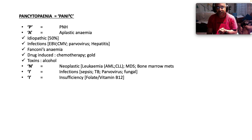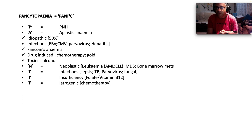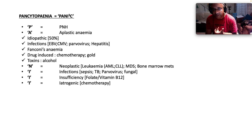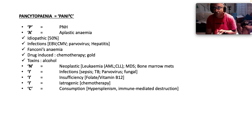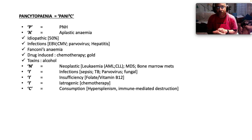I for insufficiency in the way of folate and B12 deficiency. I in the way of iatrogenesis — stuff that we do that causes pancytopenia — and chemotherapy is probably the most common cause. And C stands for a consumptive issue, like hypersplenism or immune-mediated destruction.